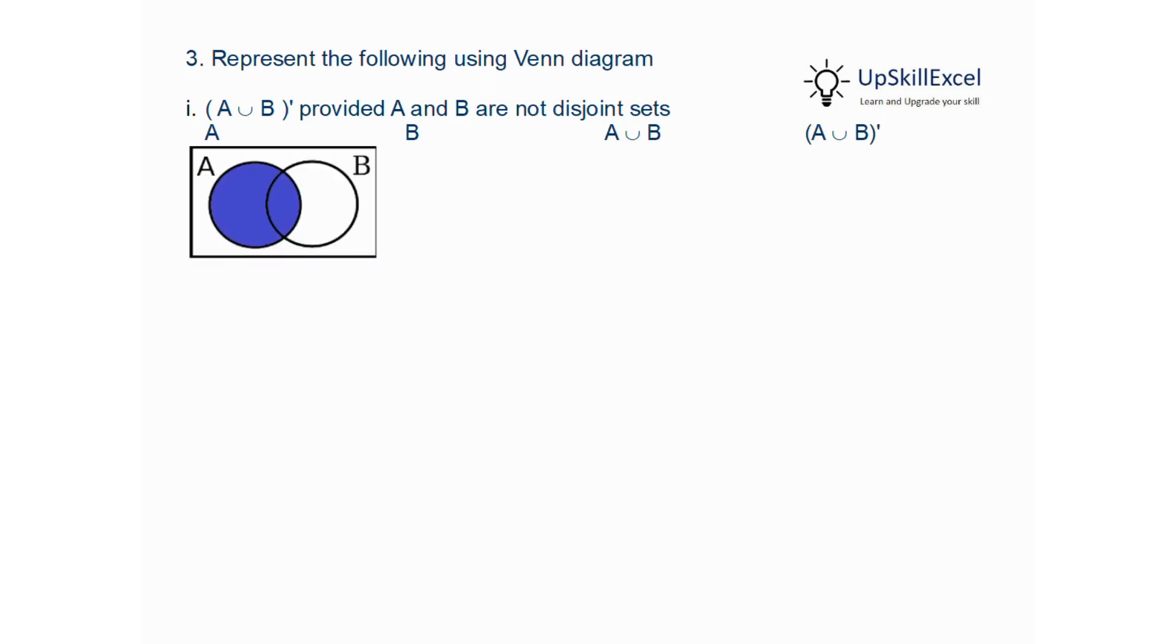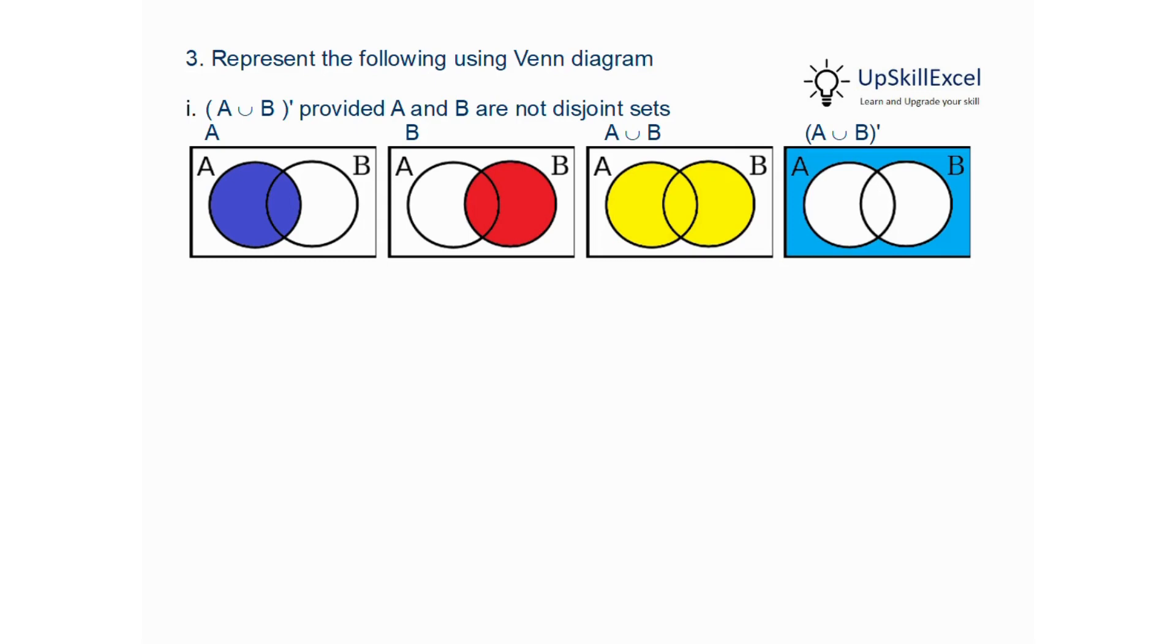So here A is represented by the blue color, B is represented by the red color, and the union will include both A and B and the common area as shown here in yellow color. When we take the complement, we will consider all the area outside this yellow color, which is shown here in light blue.